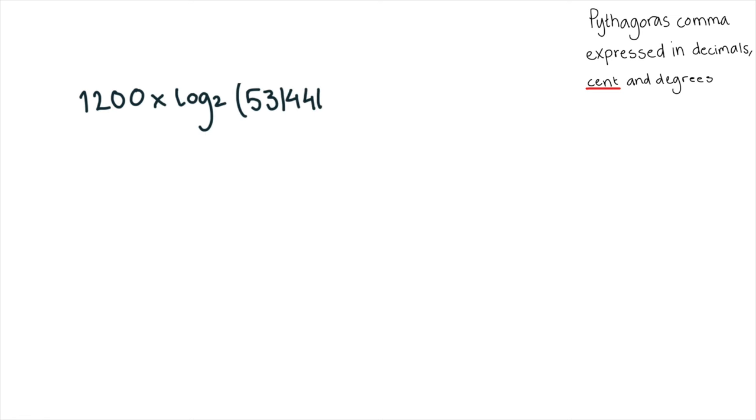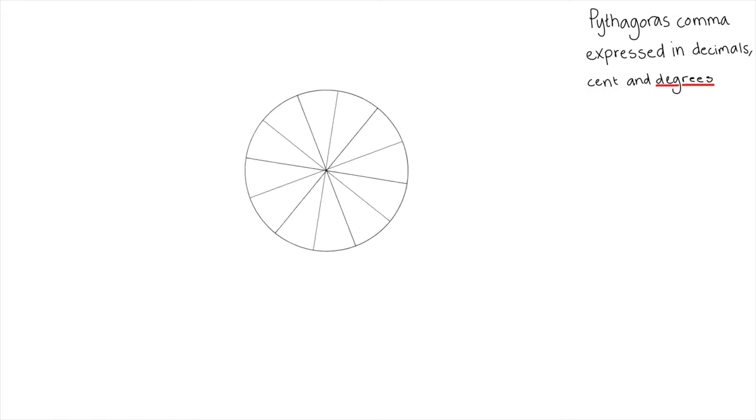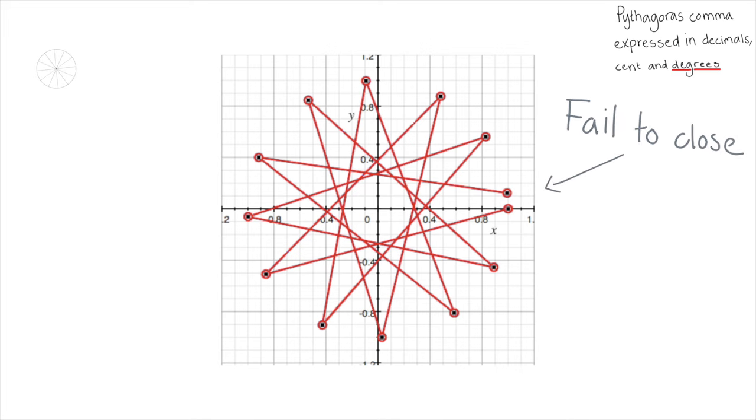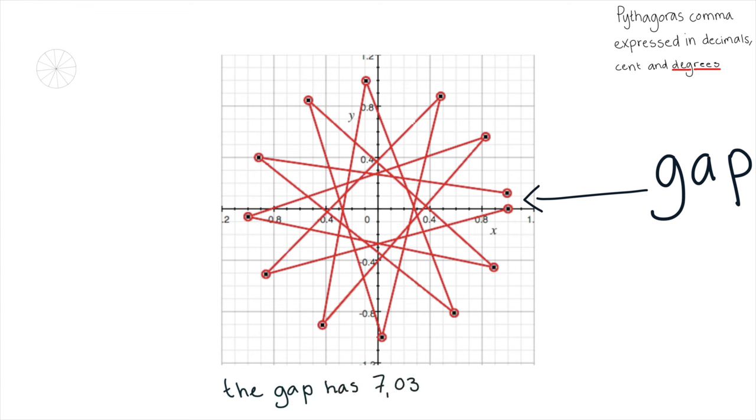The Pythagorean comma causes a 12 pointed star to fail to close. And the 12 pointed star represents the Pythagorean scale. And each line in 12 pointed star represents a just perfect fifth. And that small gap here has a central angle of 7.038 degrees.